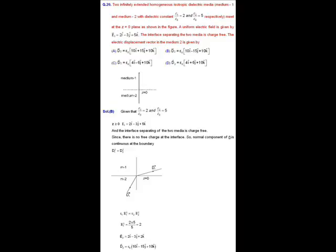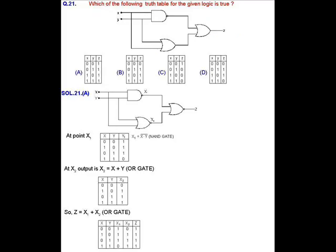So E2 vector is equal to E2 parallel plus E2 perpendicular that is equal to 2 I cap minus 3 J cap plus 2 K cap where E1 parallel equals E2 parallel. So by the definition of displacement vector D vector equals Epsilon 2 E2, D2 is equal to Epsilon 0 Epsilon R2 E2 equals 5 Epsilon 0 into 2 I cap minus 15 J cap plus 10 K cap. Option B is correct.